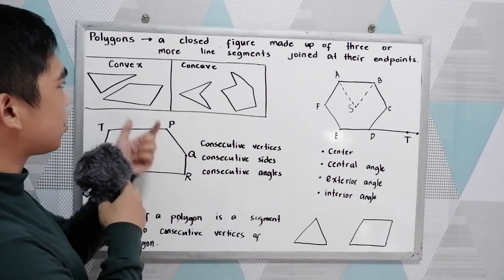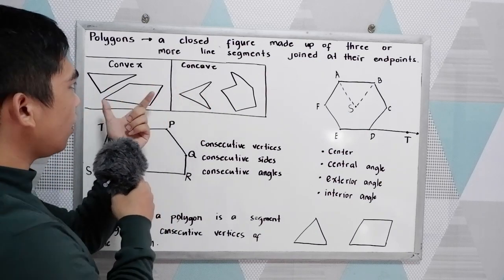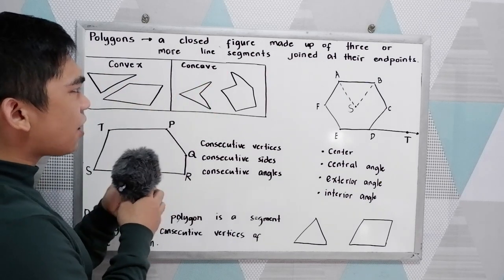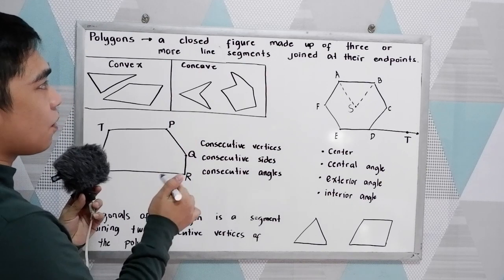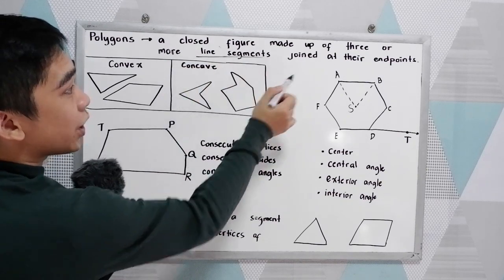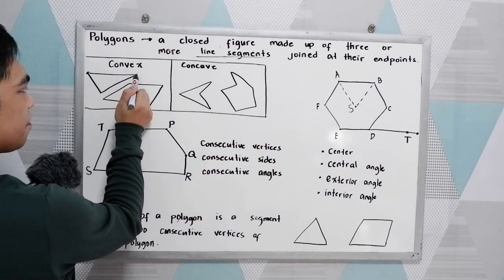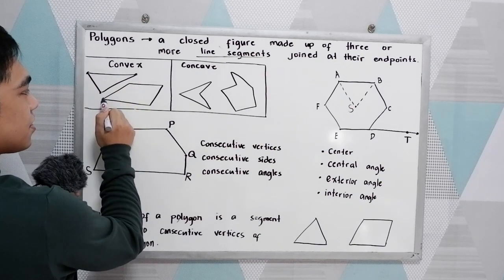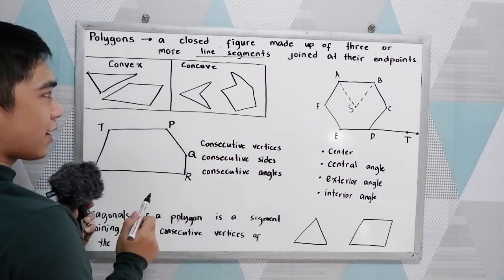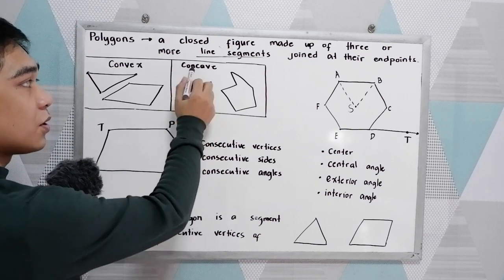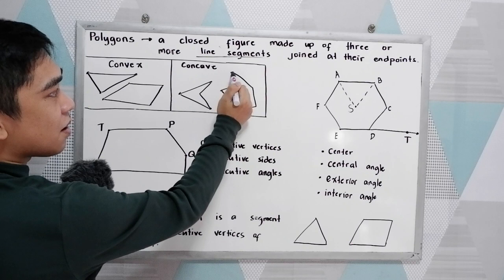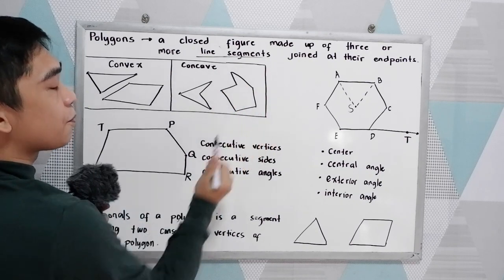We also classify polygons according to convex polygon or concave polygon. Examining the two kinds of polygons, we have the convex and concave. They are polygons because they are made up of three or more line segments joined at their end points. These are the end points and the line segments. That is the convex polygon. The following are examples of concave polygon.